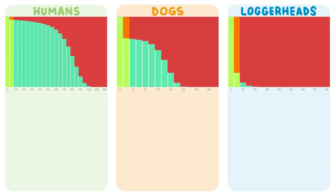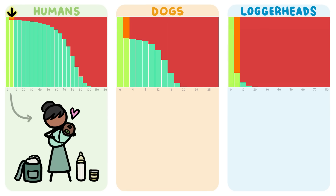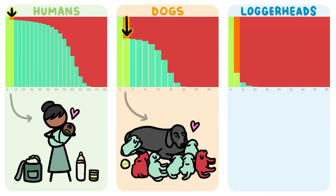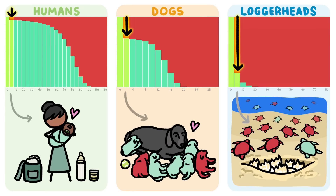Each green bar represents the individuals from the group that are still alive after a certain age, and the way the bars drop can teach us a bunch about the animals they represent. For example, this drop-off between the first and second bars represents the infant mortality rate. Some animals, like humans, have just a little drop-off, which means that parents do a lot of intensive care and not too many babies die. Some animals, like dogs, have a slightly larger drop-off, which usually indicates that parents have slightly larger litters and occasionally lose pups. Other animals, like sea turtles, have huge drop-offs, which usually means that parents don't do a lot of care and a lot of babies die.